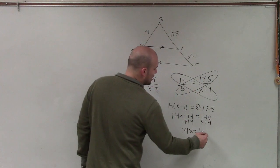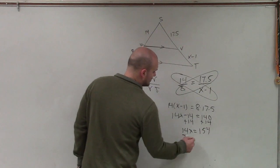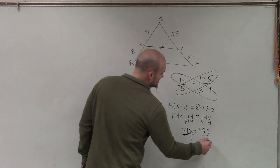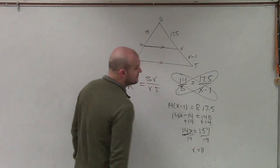So 14x equals 154, divide by 14, x equals 11.